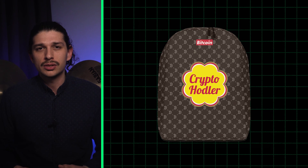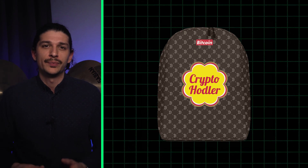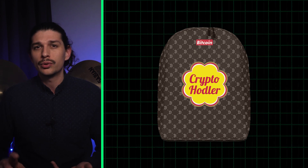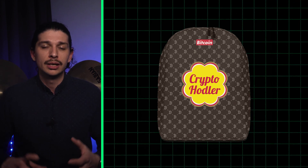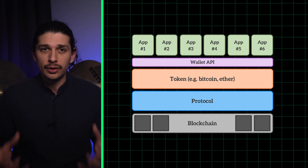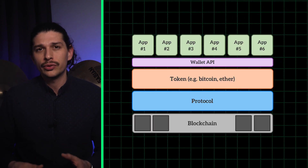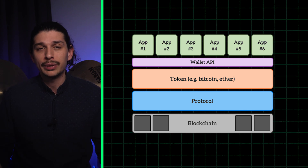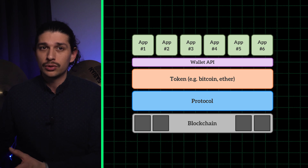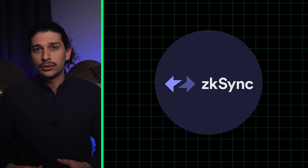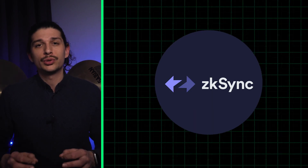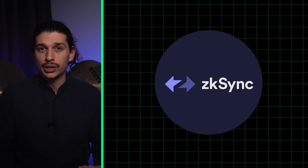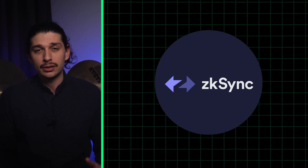Other major developments in the space include the backpack model, which allows for non-financial data like age, membership to a group, or even ownership of a Twitter profile to be baked into someone's identity. It's also worth noting that on Ethereum, ERC-4337 is implemented as a smart contract on the application layer, as opposed to the protocol layer.